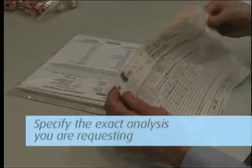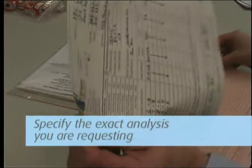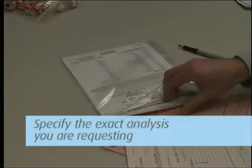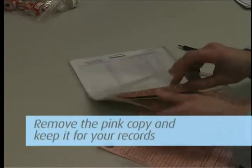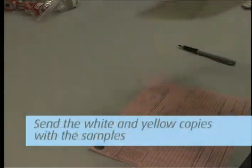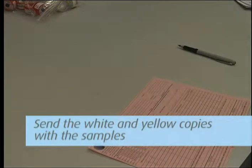Then complete the chain of custody form. It is important that you include all the information requested in order to ensure the turnaround time of your samples. Remove the pink copy and keep this for your records. Send the white and yellow copies in with the samples to the lab in the large Ziploc bag.